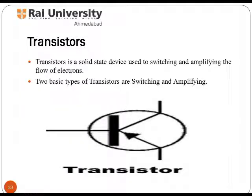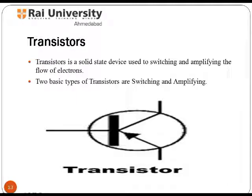A transistor is a semiconductor device used to amplify and switch electronic signals and power. It is composed of semiconductor material with at least three terminals for connection to an external circuit. When voltage or current is applied to one pair of transistor terminals, it changes the current through another pair of terminals, and thus it can amplify a signal.